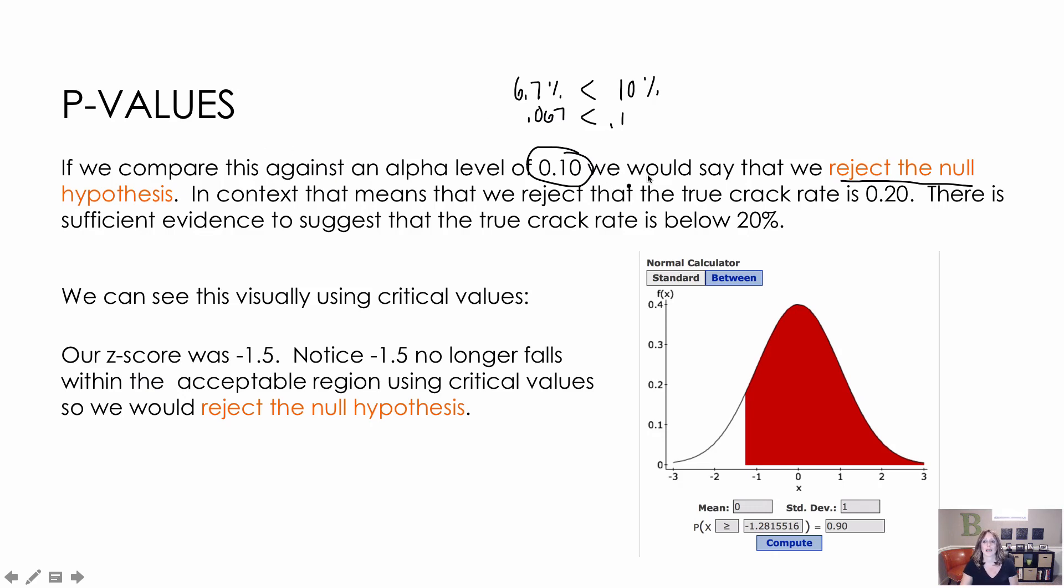So now I can say I'm going to reject the null. In context, that means that I'm rejecting that the crack rate is actually 20%. I have found enough evidence to suggest that the true crack rate is actually lower than 20% because that's what I found based on my alpha level of 0.1.